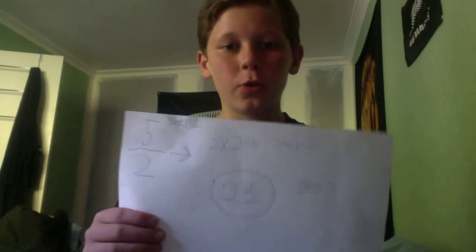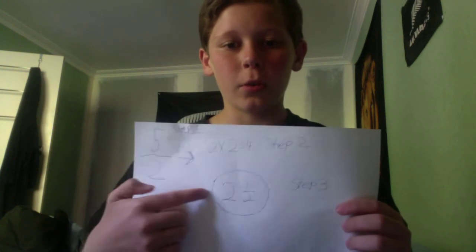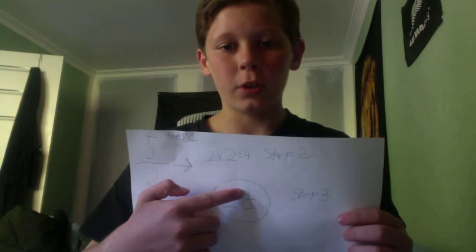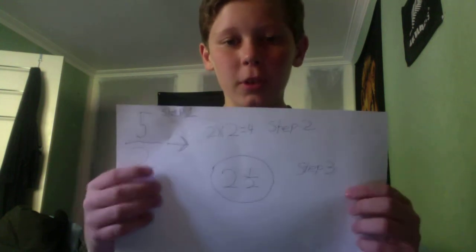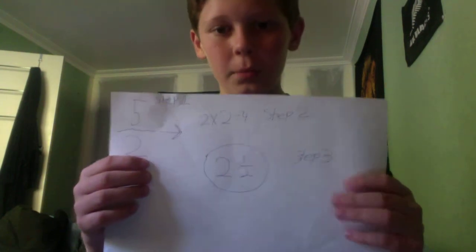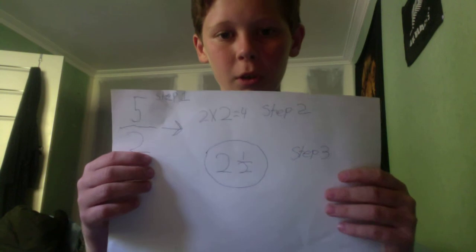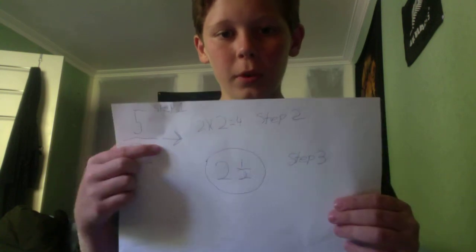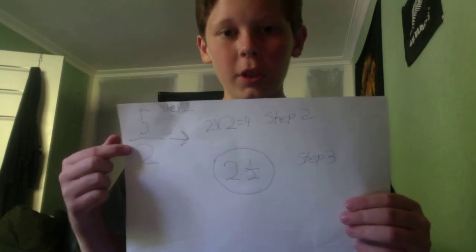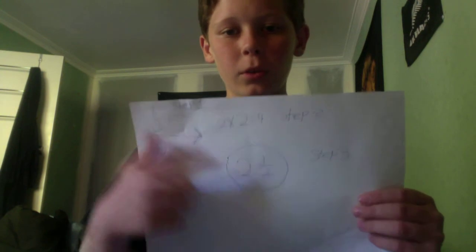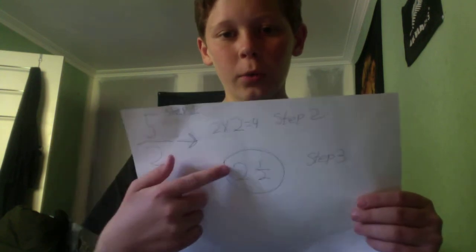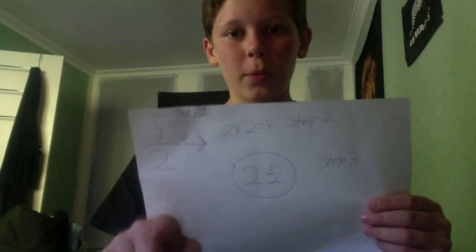That equals 4, so you get the remainder as 1, and that becomes your numerator. You keep that numerator in this one and make that the denominator in this one. Where you get that 2 from is how many 2's are in 5 altogether.